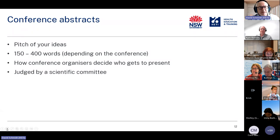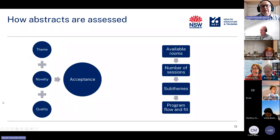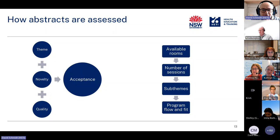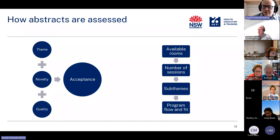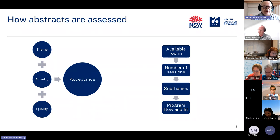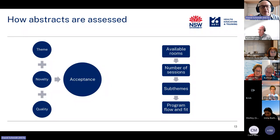A scientific committee looks at three key things. The first is the conference theme and how well the abstract aligns with it. When I was on a scientific committee for a national conference, the first advice was: does this fit our theme? If not, read no further. So you really want to make sure your abstract fits with the theme of the conference.